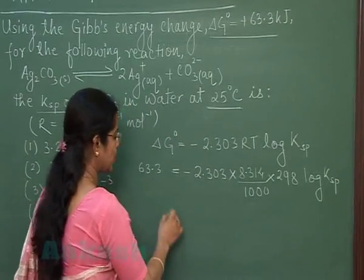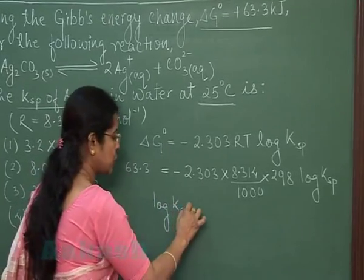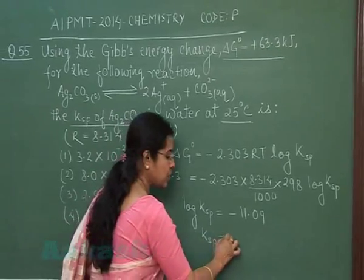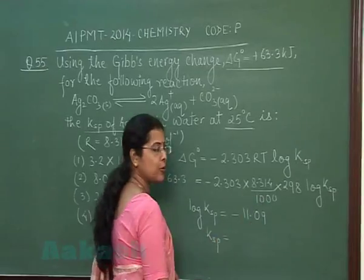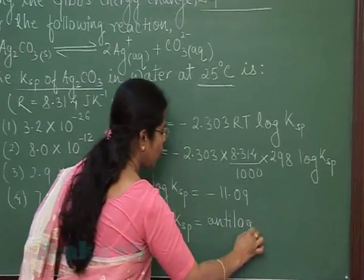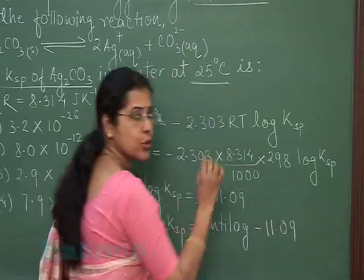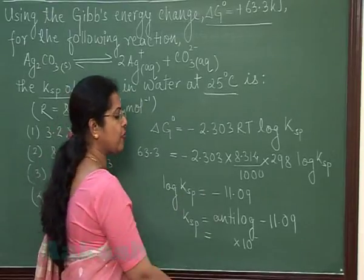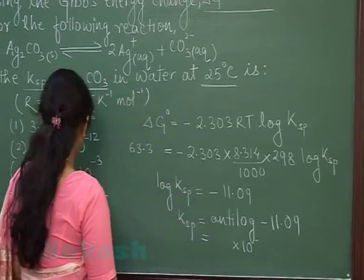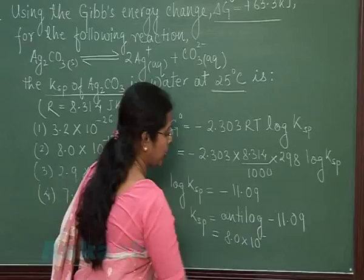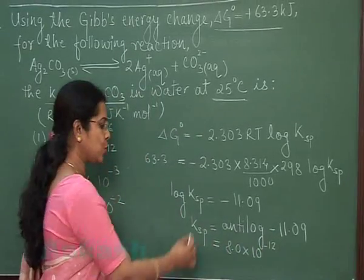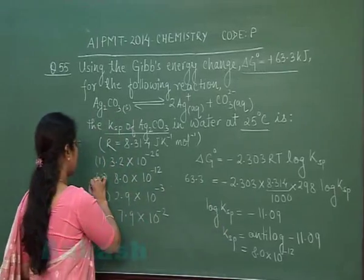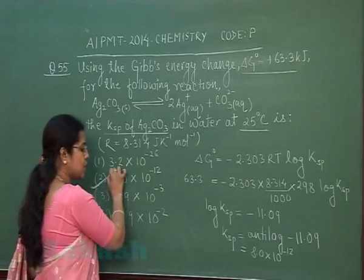When we solve these values, log Ksp comes out to be −11.09. To find the solubility product, we take the antilog of −11.09, giving a negative power. The exact value comes out to be 8.0 × 10⁻¹², which is option number 2. So the correct answer is option number 2.